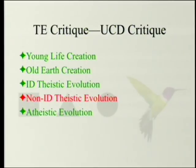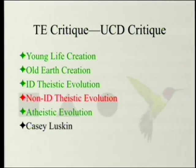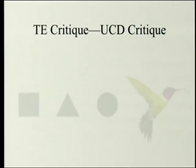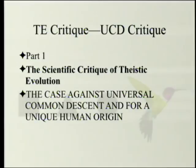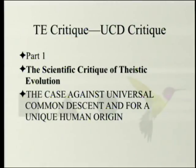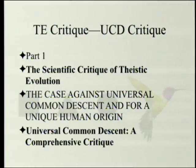The chapter we're going to look at is written by Casey Luskin, one of two that he wrote. It'll be interesting when we get to the other one, because they form part of the same scheme. This is in part one of the book, which is a scientific critique, section two of part one, which is the case against universal common descent and for a unique human origin. This chapter is entitled Universal Common Descent: A Comprehensive Critique.